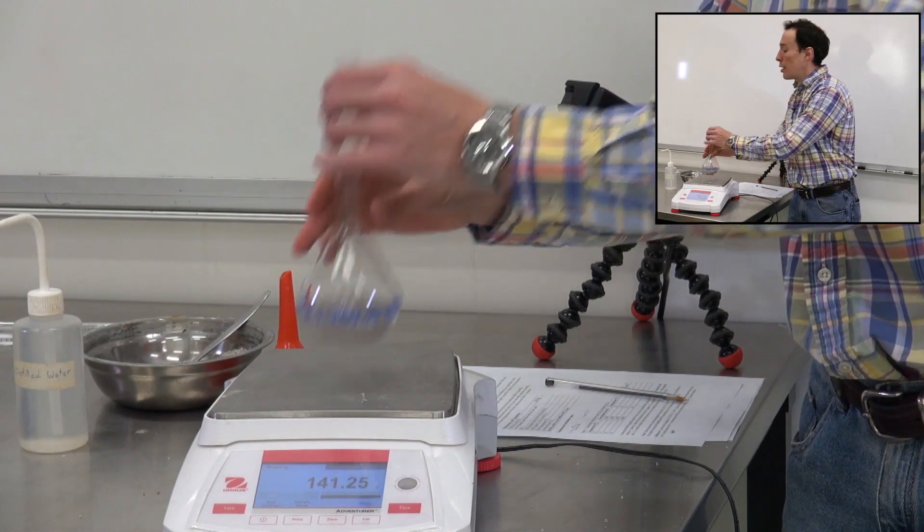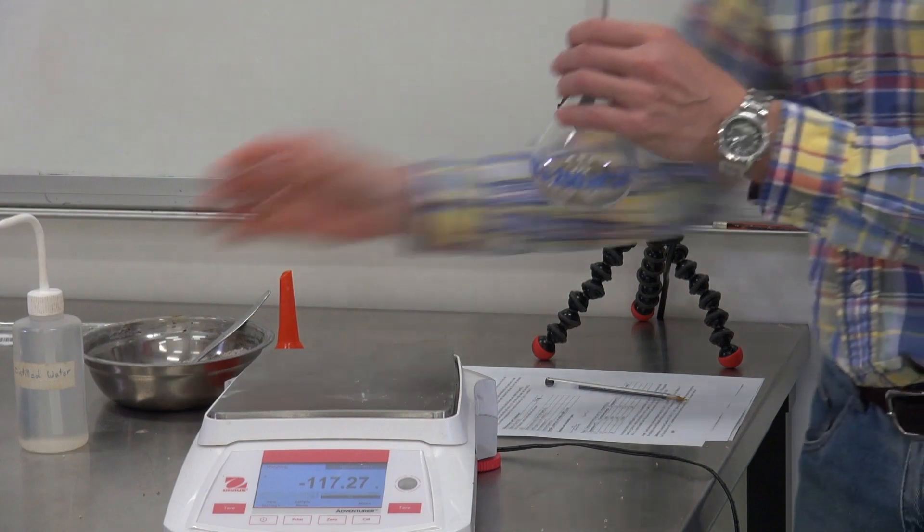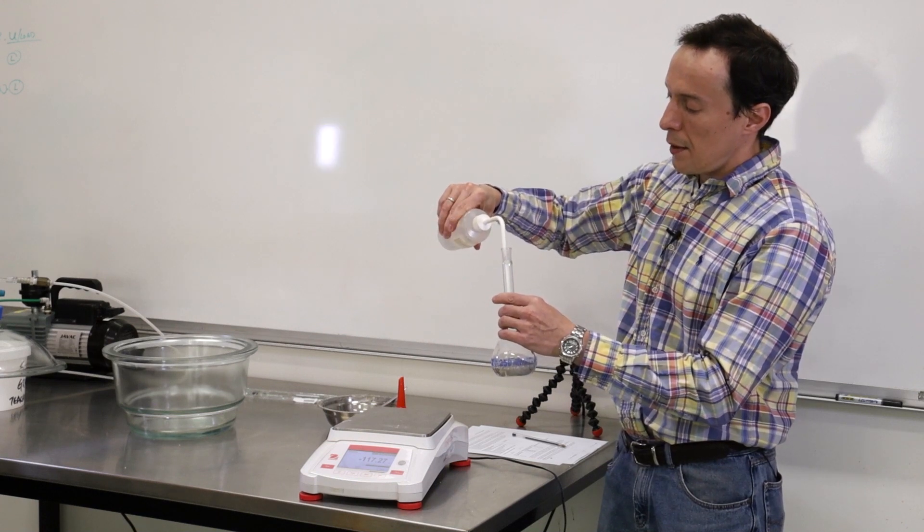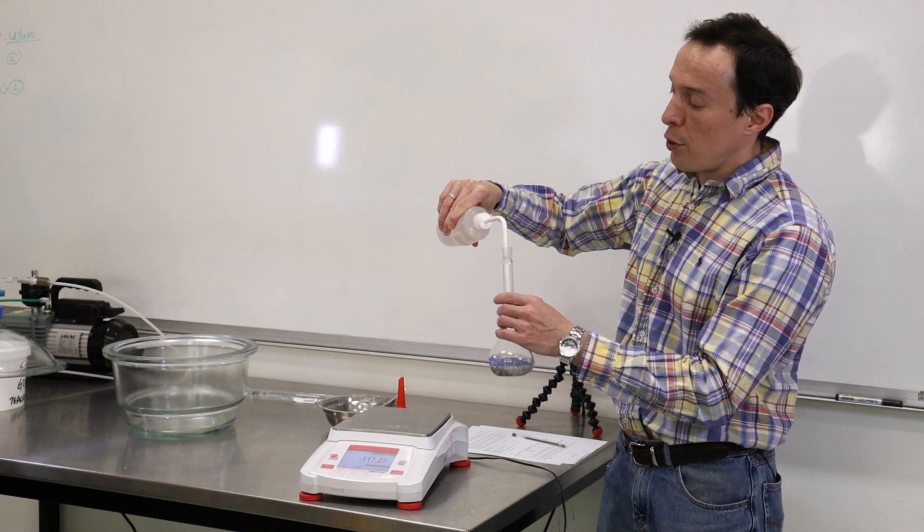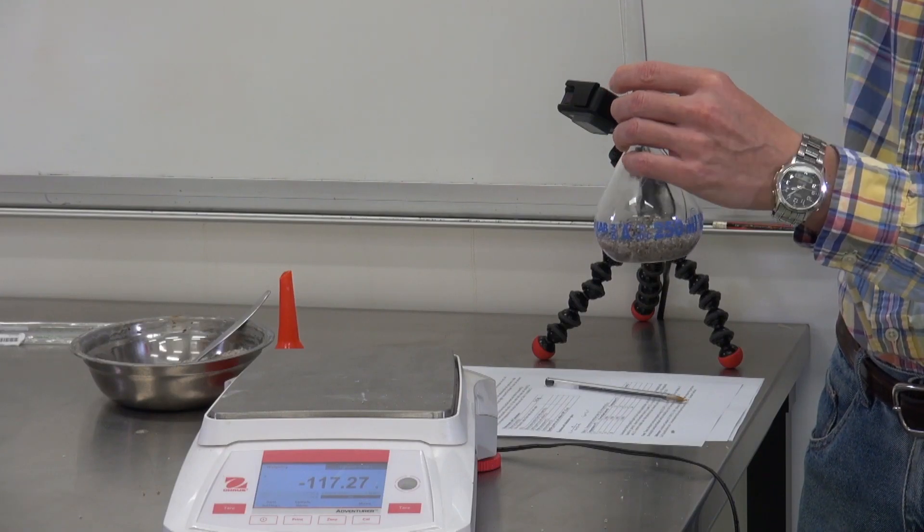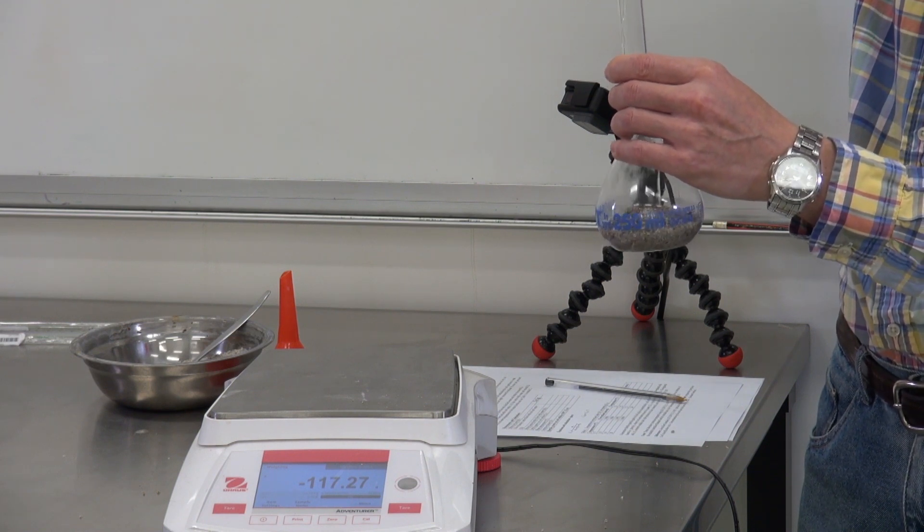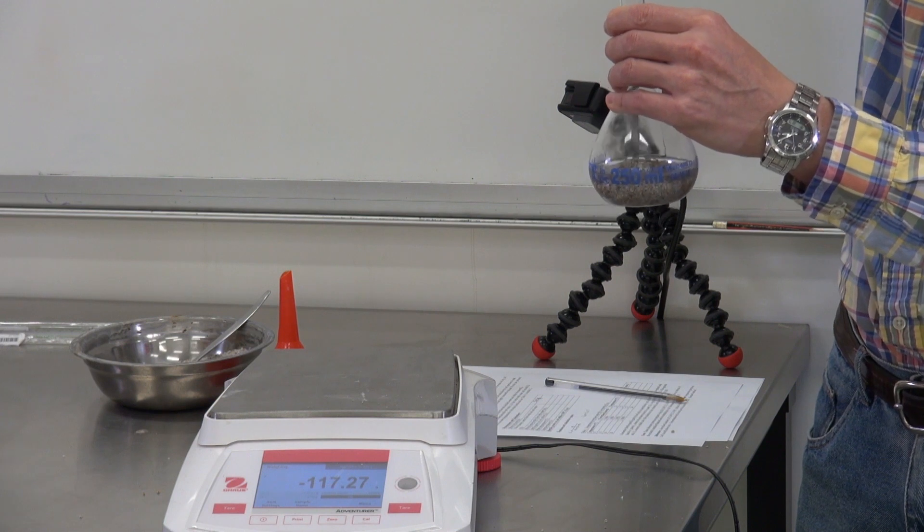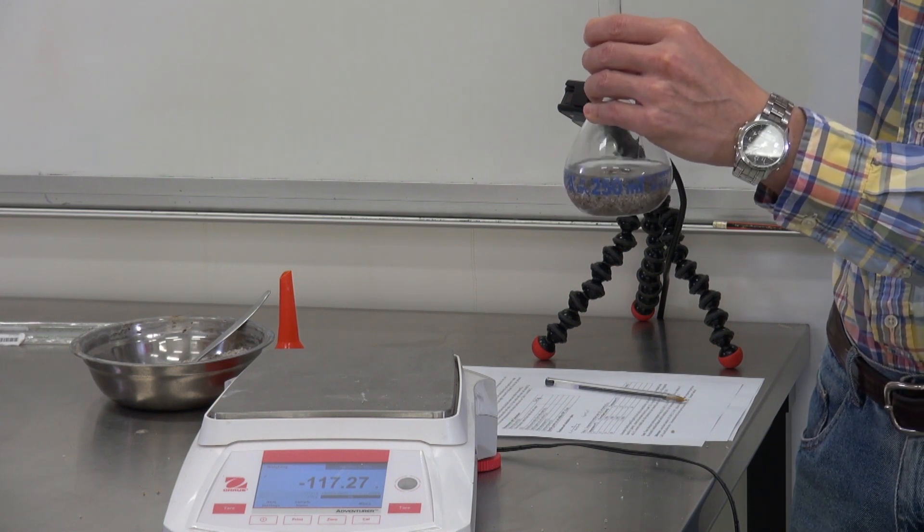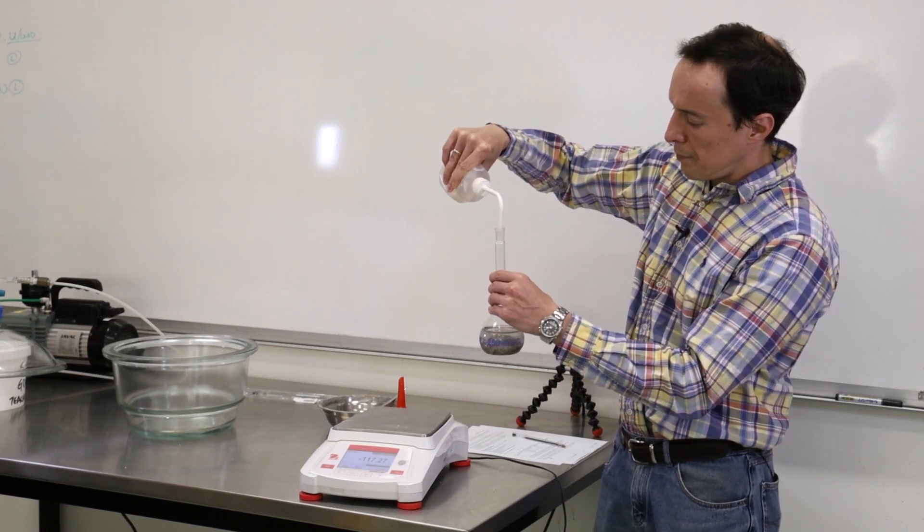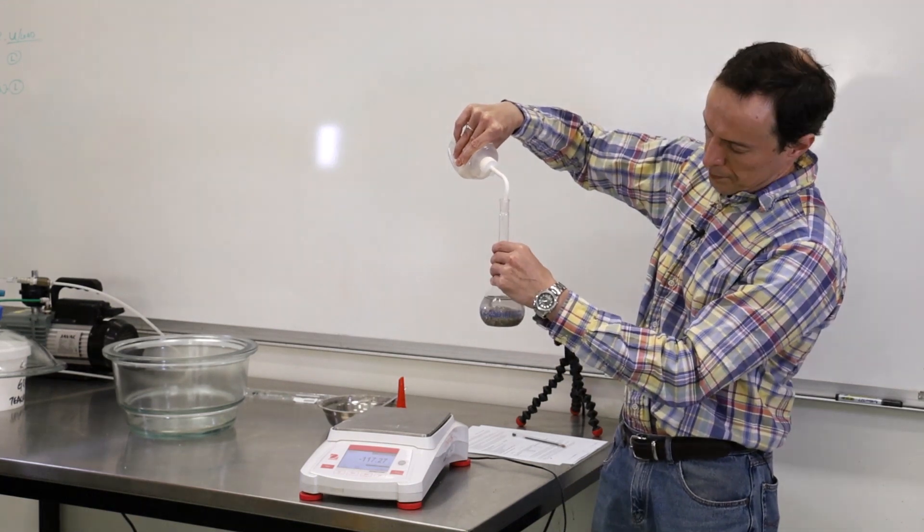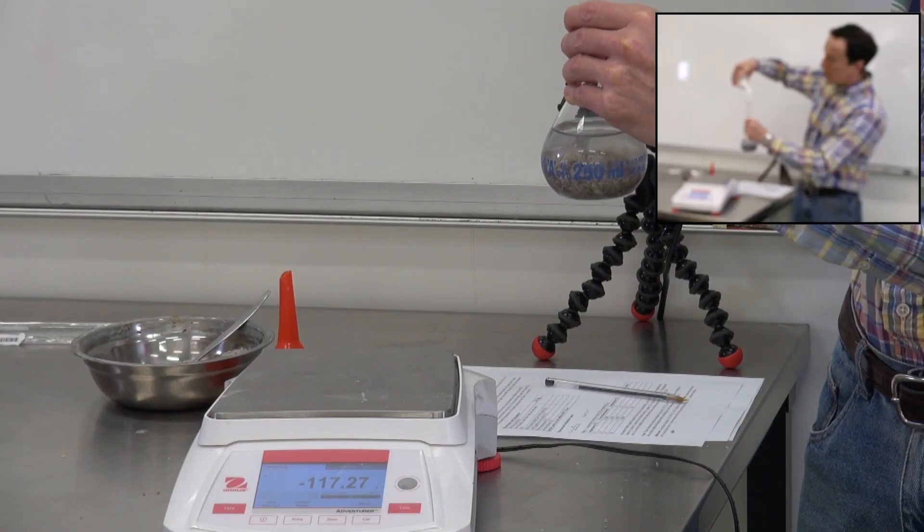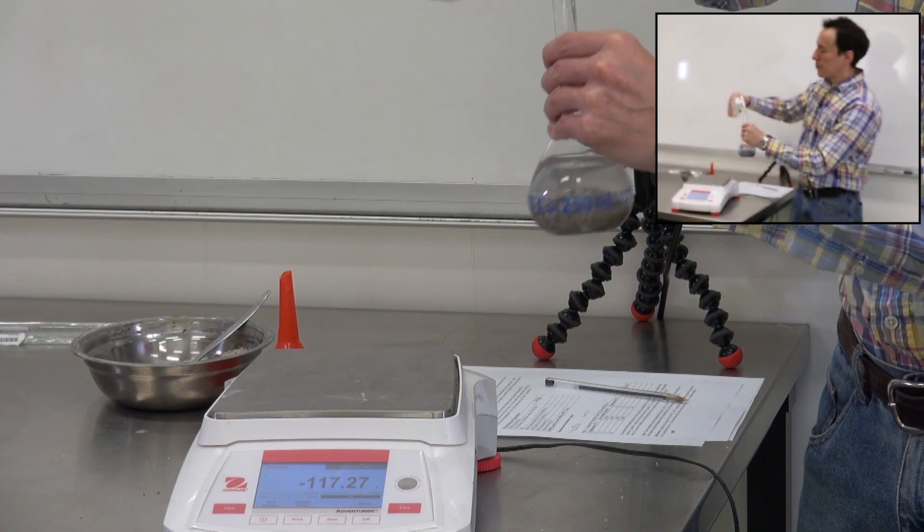Next step is we're going to add water, about two-thirds of the bottle. The point is to saturate the soil. It should be about two-thirds of the bottle, just add a little bit more. Okay, that's about right.